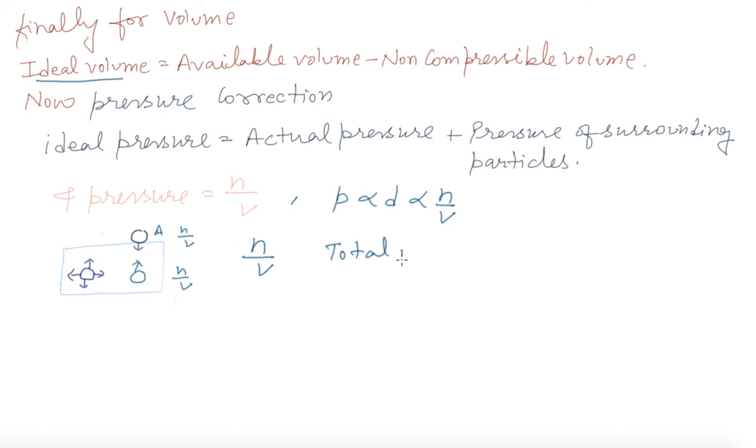Total inward pull on this particle A is given by this one. Total inward pull is directly proportional to N by V of the particle owns. Multiply with one more N by V. Then finally, pressure is directly proportional to N square by V square. And then P is equal to A N square by V square.